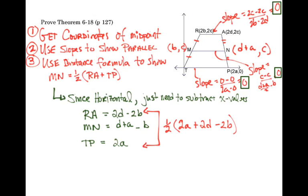If we take the sum of RA and TP, so 2d minus 2b plus 2a, and take half of that, we get a plus d minus b, which is the same as MN. There is the proof for our theorem.